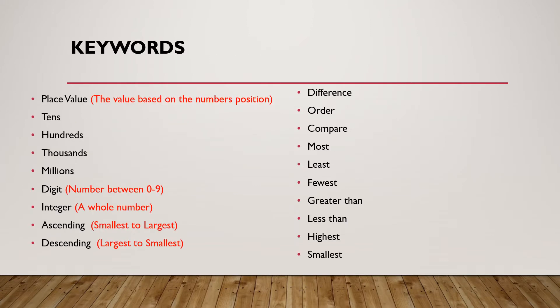The keywords for today's lesson are on the screen now. I've written the description in red of some of the more well used ones. Place value is the value based on the number's position. So this is one of the things we're going to be looking at in the lesson. For example, 123 — that 2 is a 10, that 2 is 20, so it is in the tens column.